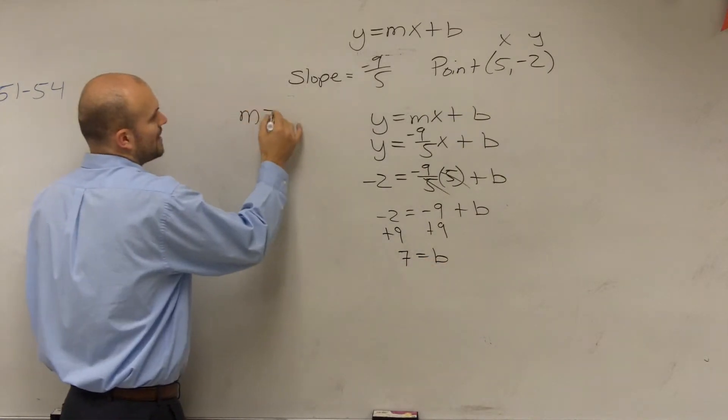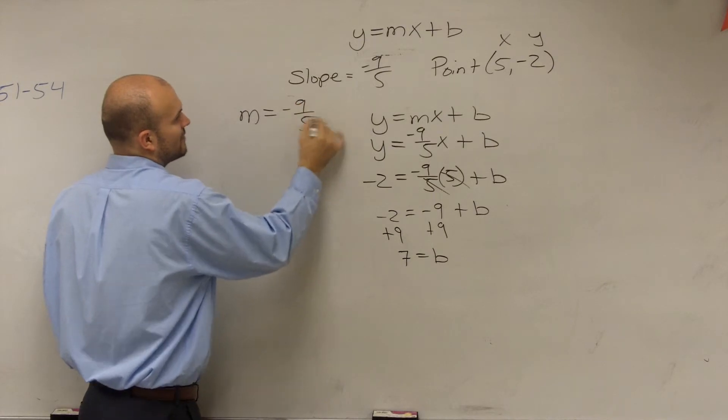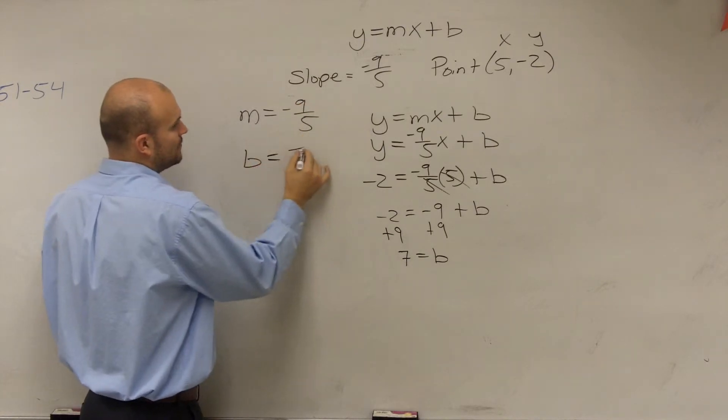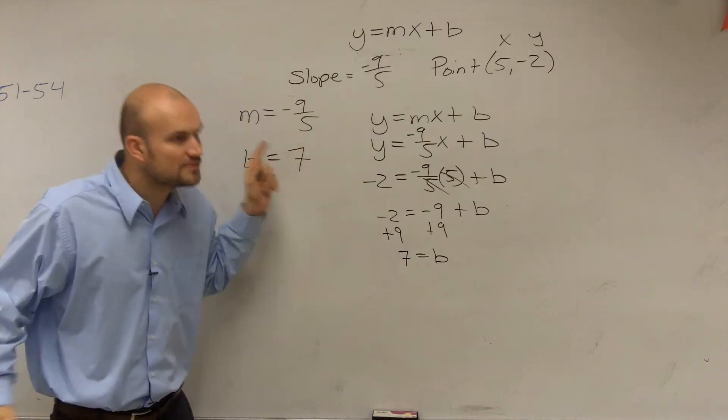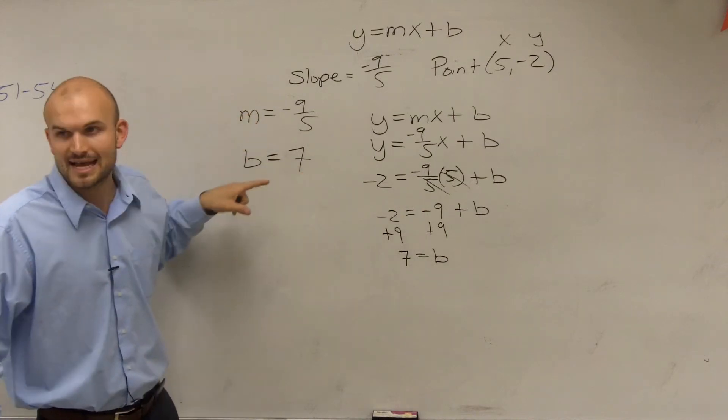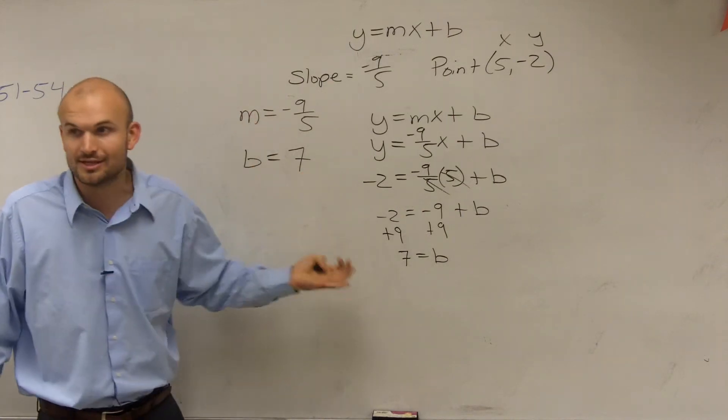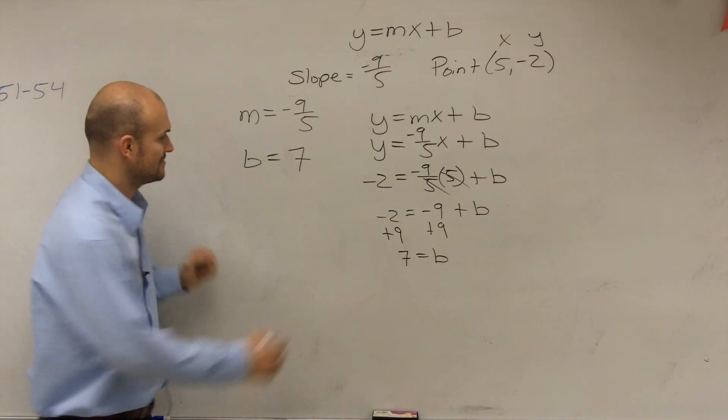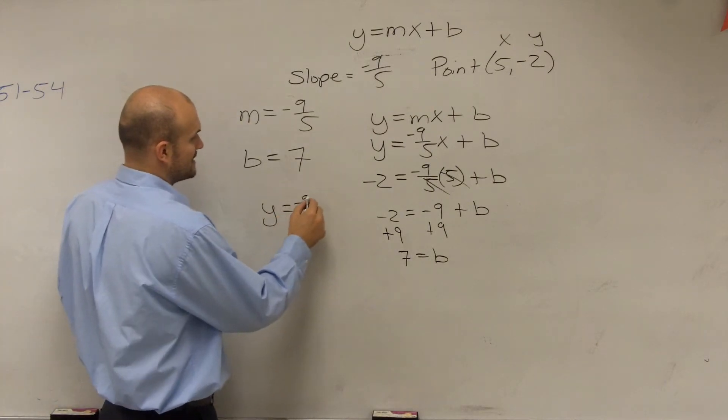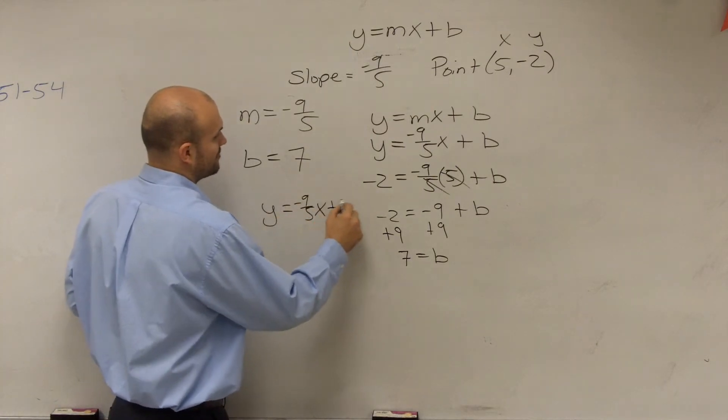So now I know my slope, which is negative 9 over 5. I know my b, which is 7. Go back to that first video I showed you. When I tell you what the slope is and what the y-intercept, can you write the equation of the line? Yes, y equals negative 9 over 5x plus 7.